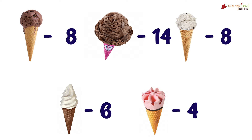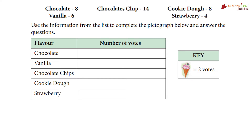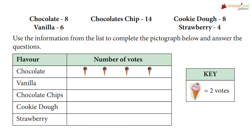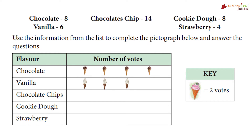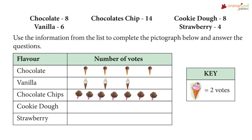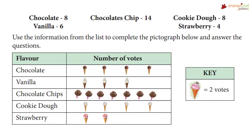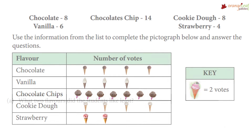Now let's put this information in a pictograph. The key here is that one ice cream equals two votes. In the first column we put the flavors and in the second column the number of votes. Since chocolate has eight votes, we will draw four ice cream cones. Since vanilla has six votes, we will draw three ice cream cones. Chocolate chip has 14 votes, so we will draw seven ice cream cones. Cookie dough has eight votes, which means four ice cream cones, and strawberry has four votes so two ice cream cones.